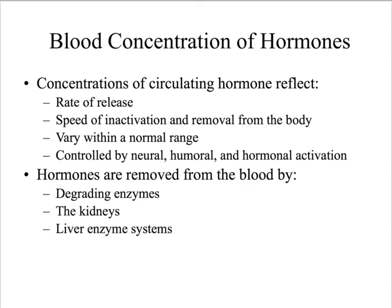The concentrations of circulating hormones reflect the rate of release of that hormone and the speed of inactivation and removal from the body. Even when you release a hormone to do some kind of job, you don't want that high concentration of hormone being there forever — it needs to be brought back down. For example, when you've eaten a big meal you release a whole bunch of insulin that allows blood sugar to be taken into your bloodstream, but you wouldn't want those high amounts of insulin to stay in your body forever, because then you would become hypoglycemic.